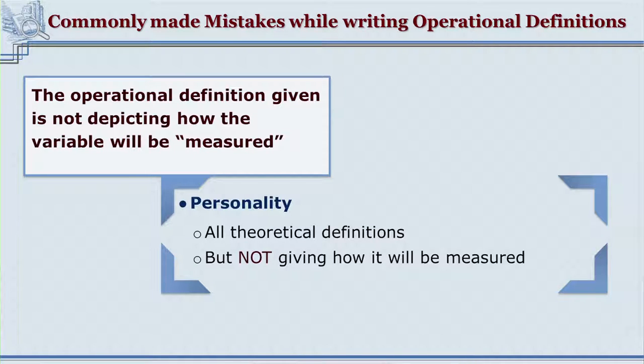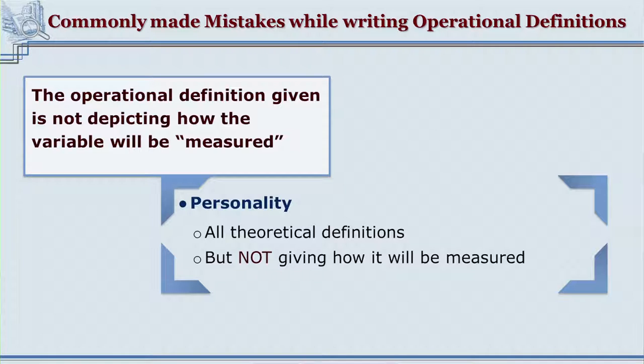Another mistake is when the researcher gives a definition of the terminology but does not indicate how the variable will be measured. The very purpose of operational definitions is to make clear how that variable will be measured. Unless the aspect of measurement or observation is mentioned in the definition, it is not truly an operational definition. For example, defining personality as 'a collection of all attributes a person carries' is theoretically acceptable but does not indicate how personality will be measured in that particular research.